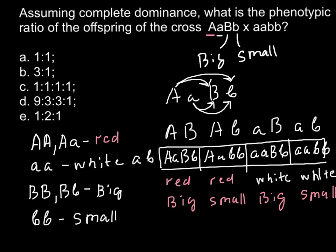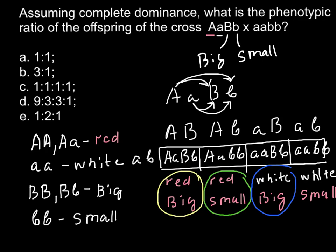As you see, all four genotypes produce different phenotypes. The first combination is red and big, the second is red and small, the third is white and big, and the fourth is white and small. That means the ratio would be 1:1:1:1. So the correct answer would be C.